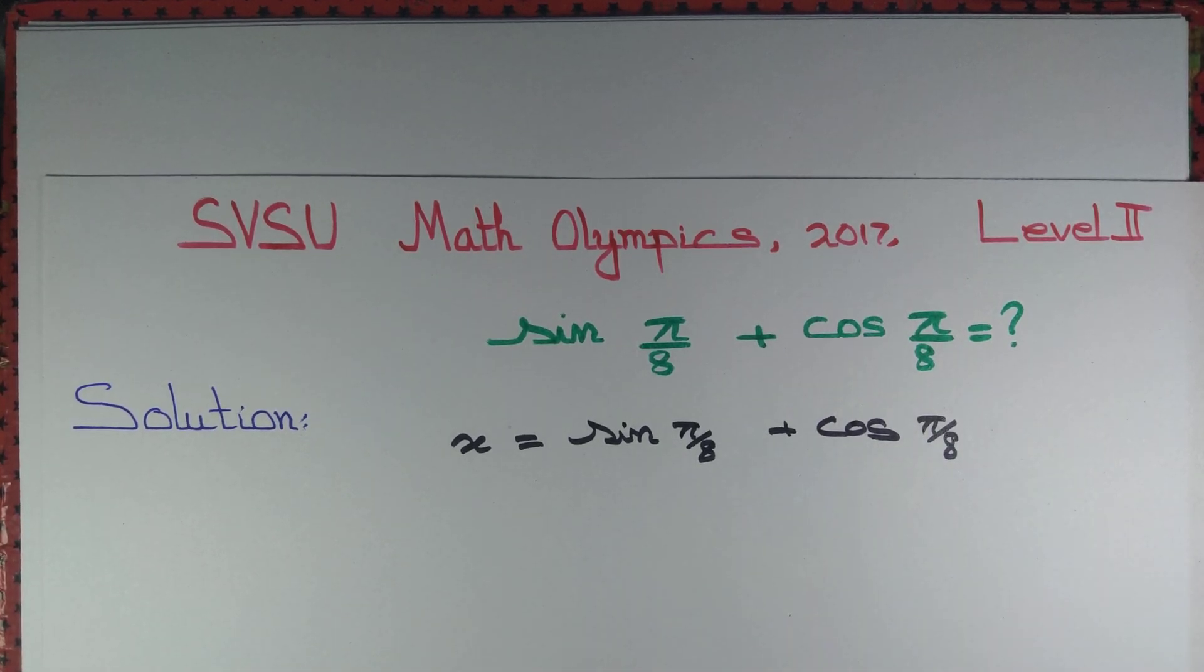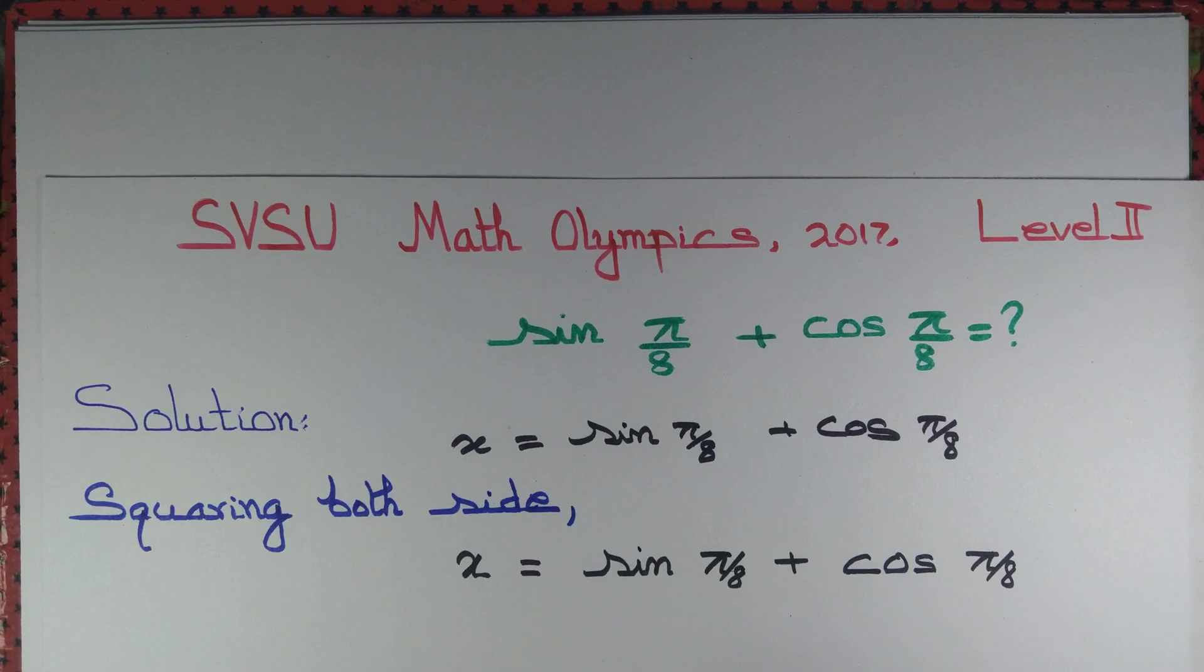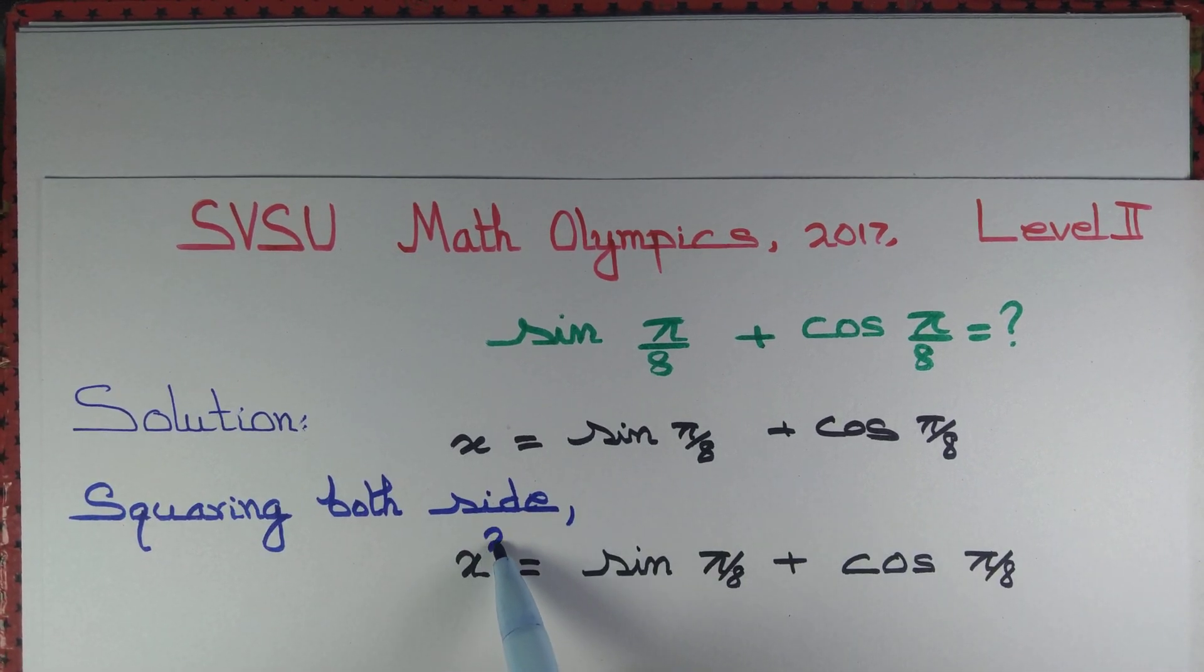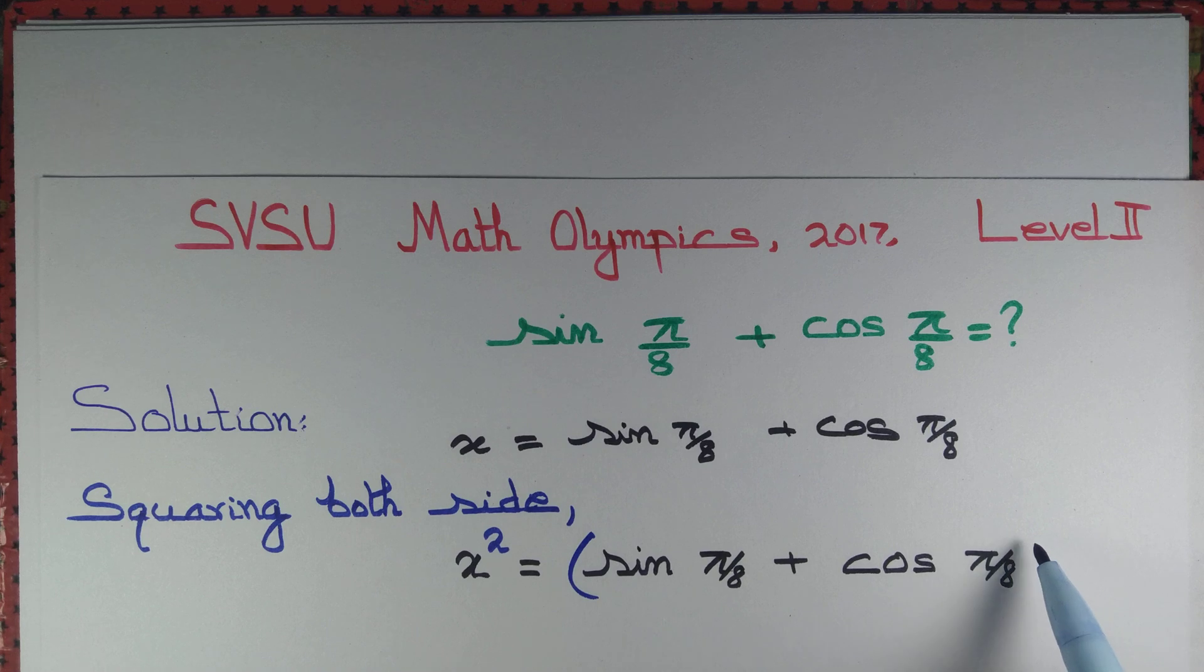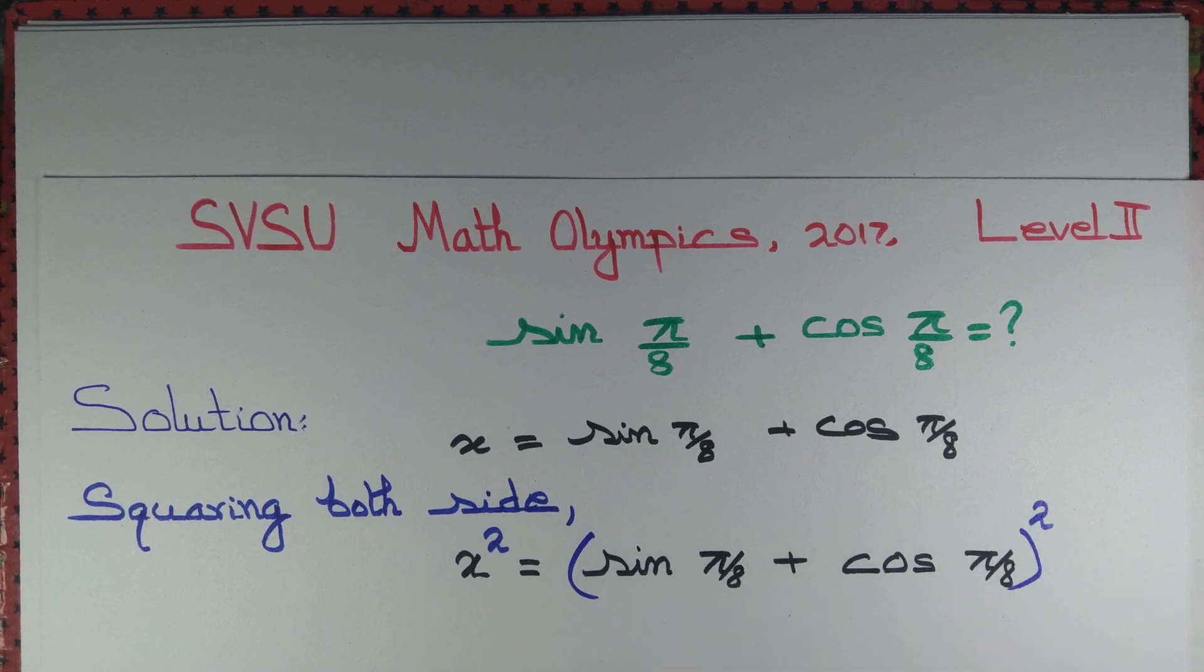Now we square both sides. We obtain x² equal to sin π/8 plus cos π/8 whole thing squared.